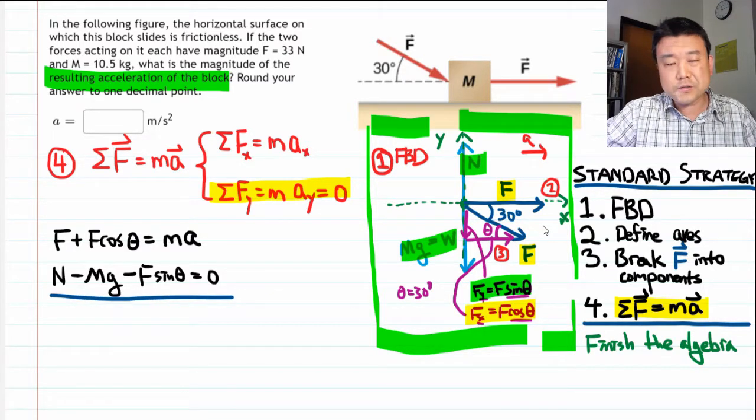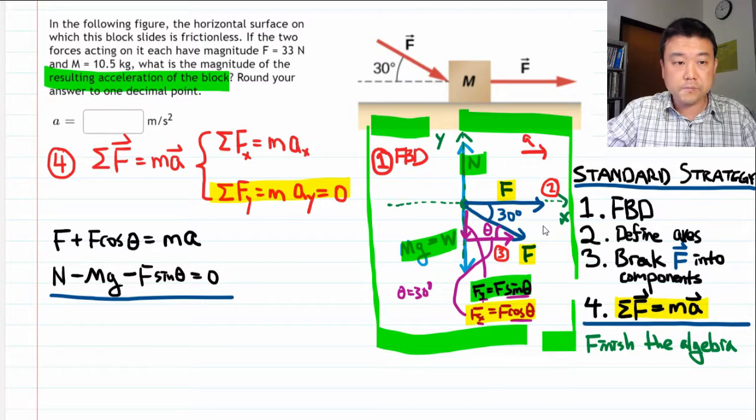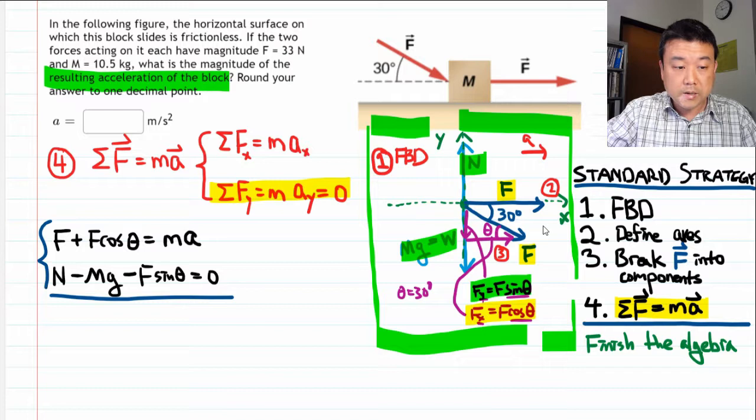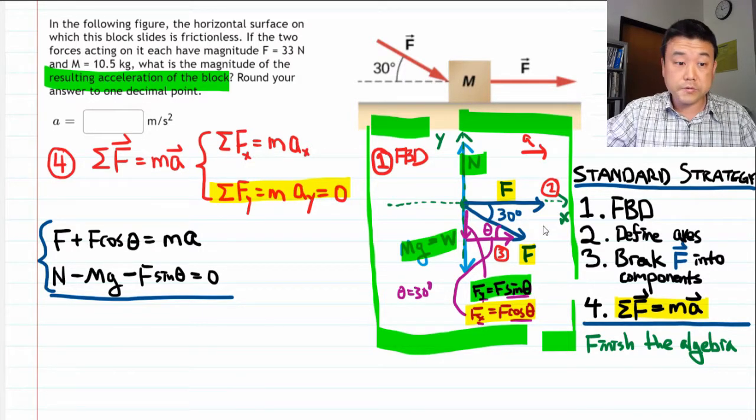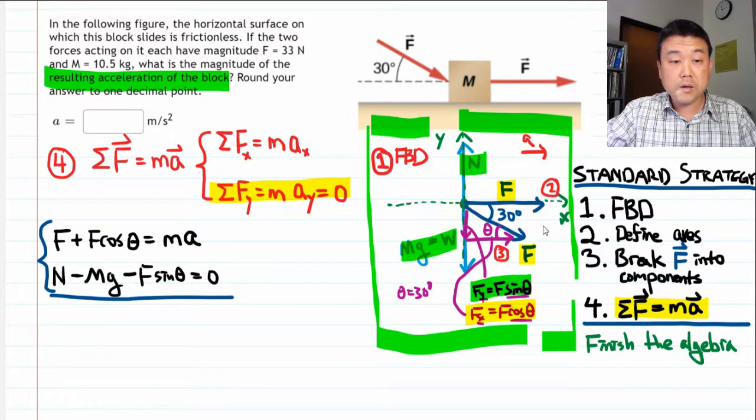So this is the end of the standard strategy. And note that it doesn't quite finish solving the problem for you. What it does leave you with is a system of equations. So I have two equations. If I only have two unknowns, then this is solvable. Let's count the unknowns. Force is known, theta is known, mass is known, what is not known is the acceleration.